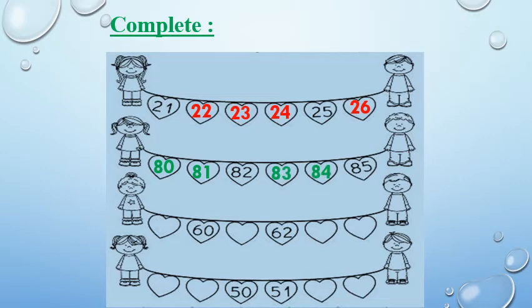The next question: a missing number, then 60. Let's remember — which number comes before 60? 59. Excellent, 59. Now let's count: 59, 60. After 60: 61, 62. After 62: 63, 64.